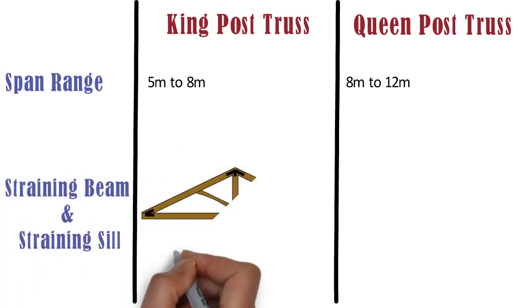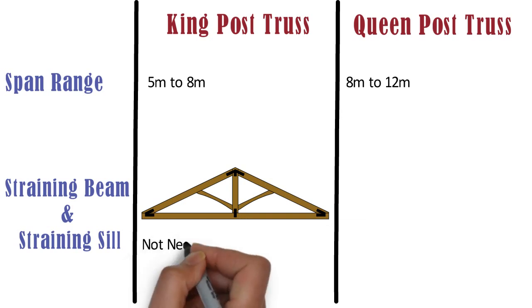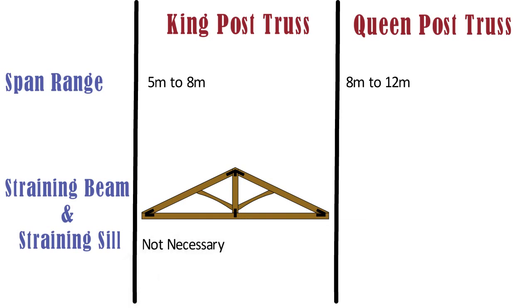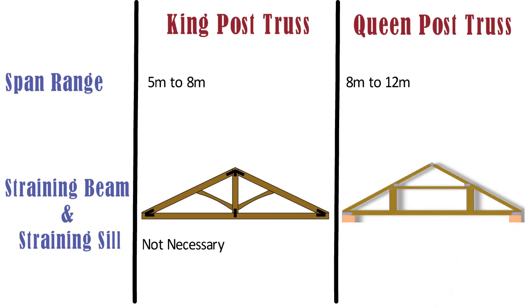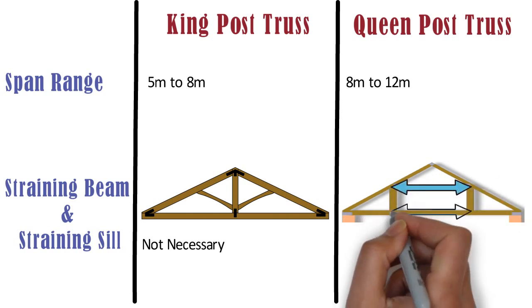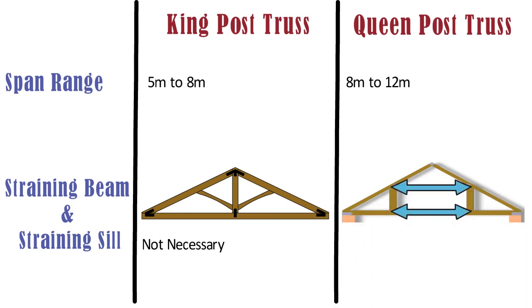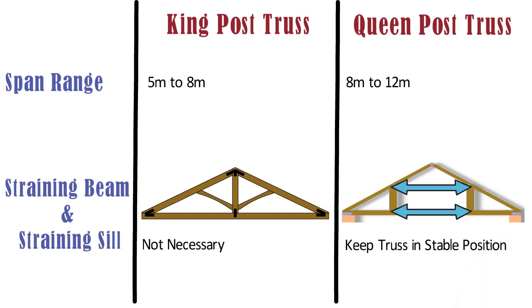In case of king post truss, straining beam and straining sill are not necessary. Whereas in case of queen post truss, straining beam and straining sill are used to keep the queen posts in a stable position.